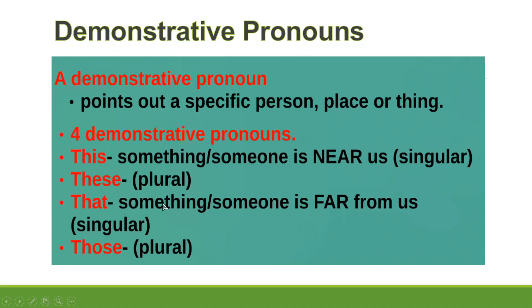When talking about something or someone that is far from you, you use 'that' — singular — for one thing or person far away: 'that person,' 'that house,' 'that restaurant.' If there are many things far away, you use 'those': 'those restaurants,' 'those books,' 'those chairs,' 'those people.' Do not forget the four demonstrative pronouns: this, these, that, and those.